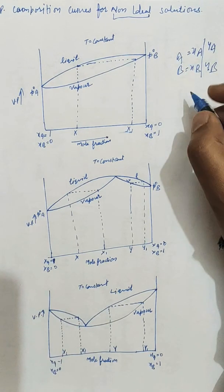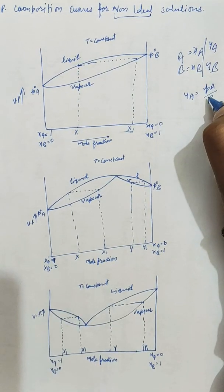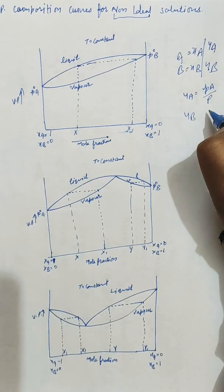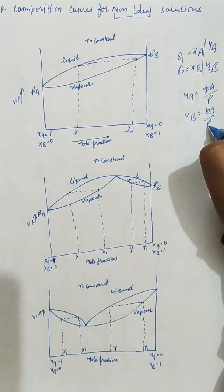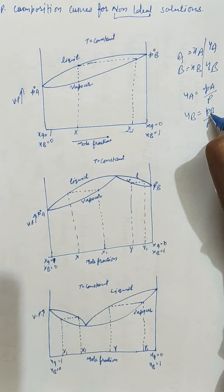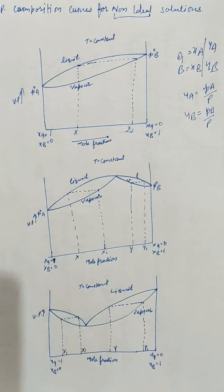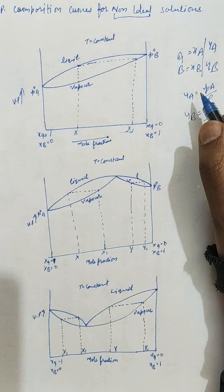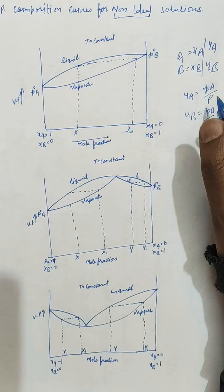The mole fraction of component A in the vapor phase is y_A = p_A / p, and the mole fraction of component B in the vapor phase is y_B = p_B / p, where p is the total pressure, p_A is the partial pressure of component A, and p_B is the partial pressure of component B in the mixture.